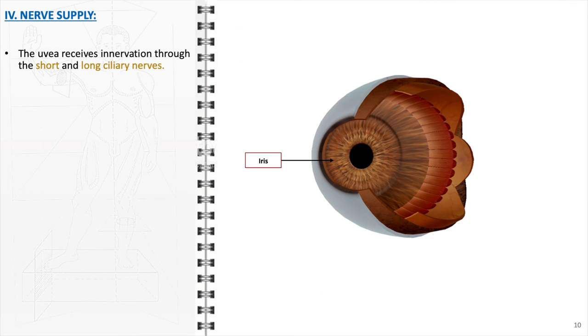The innervation of the uvea is an intricate system involving both the short and long ciliary nerves. These nerves are responsible for the regulation of the pupil's size and the eye's ability to accommodate for near and far vision.